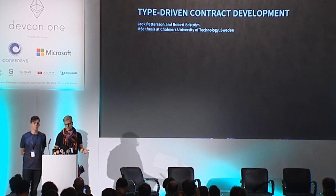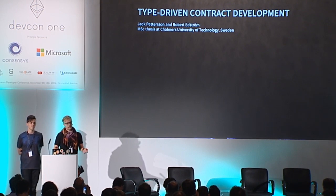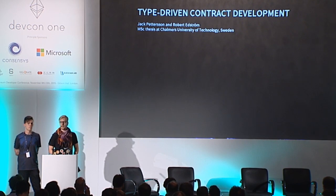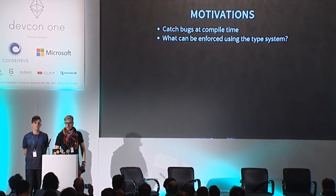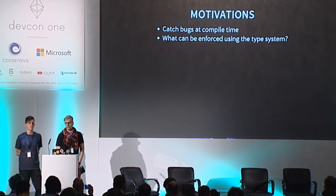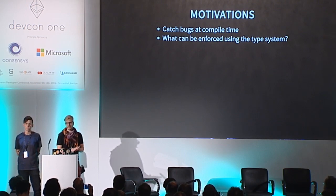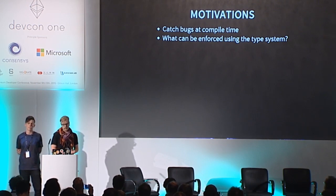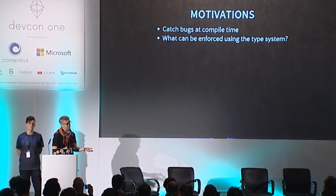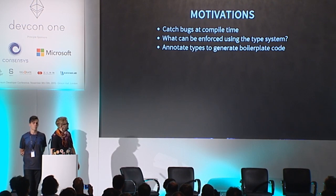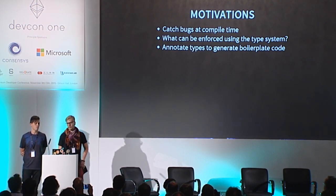We will also have a small example of how an expressive type system can help in contract development. When you deploy a smart contract to production, you want to be really sure that it behaves precisely as you intended to, so the more the compiler can catch for you the better.